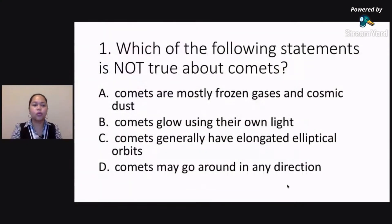Now, going back to our question, which of the following statements is not true about comets? Again, comets are mostly frozen gases and cosmic dust. Comets glow using their own light. Comets generally have elongated elliptical orbits. Comets may go around in any direction. The correct answer,